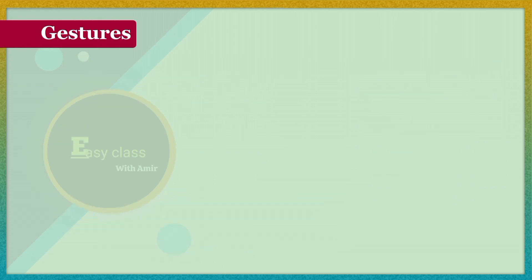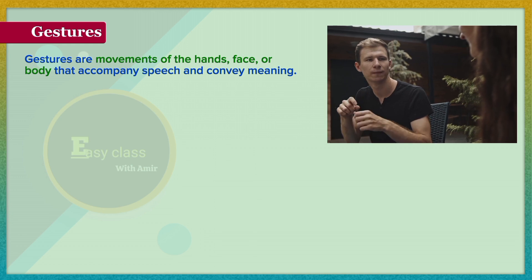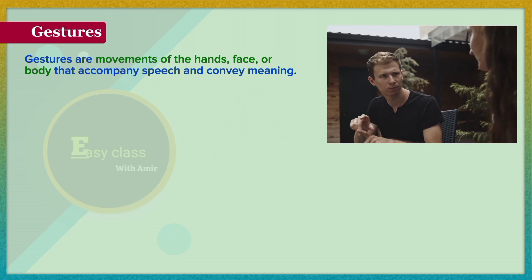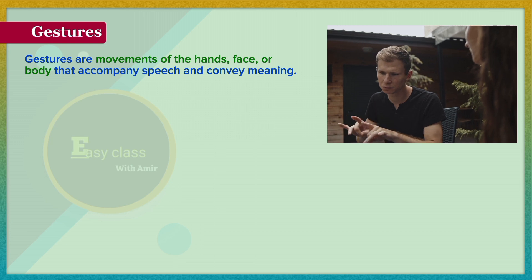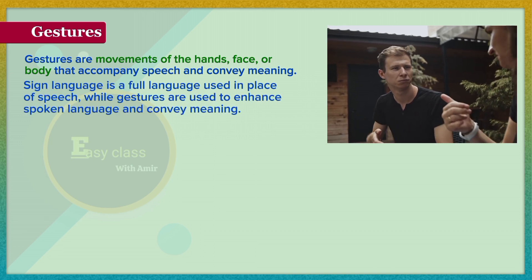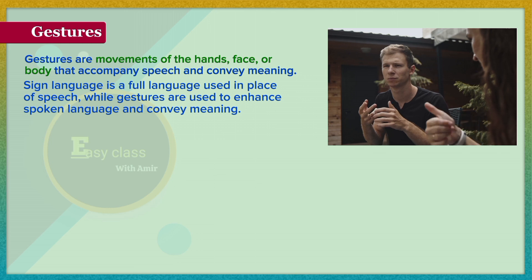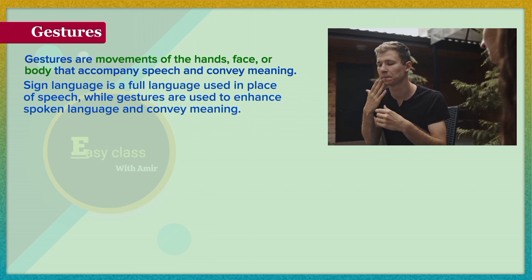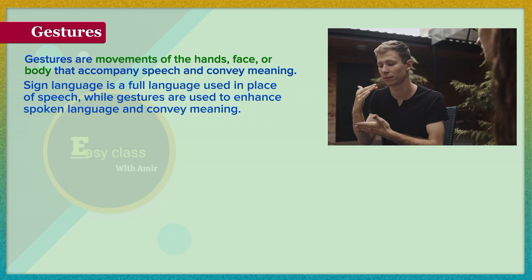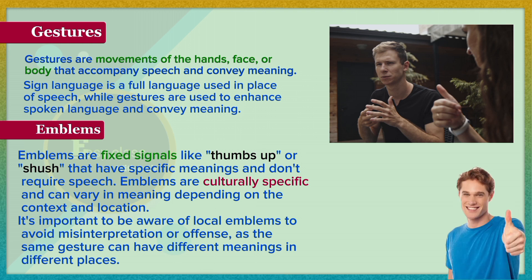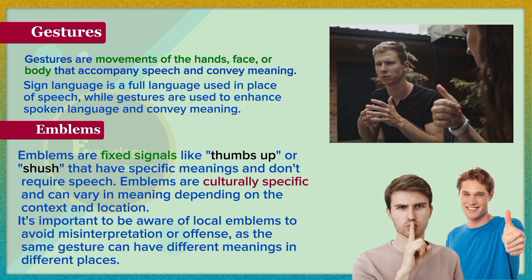Gestures are movements of the hands, face, or body that accompany speech and convey meaning. Sign language is a full language used in place of speech, while gestures are used to enhance spoken language and convey meaning. Emblems are fixed signals like thumbs up that have specific meanings and don't require speech.